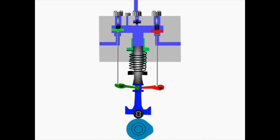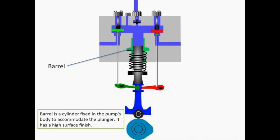Let's take a front cross-sectional view of the pump for simple understanding. The pump comprises of a barrel, which is a cylinder fixed in the pump body which also accommodates the plunger and has a very high surface finishing.